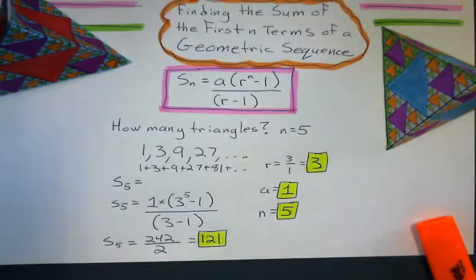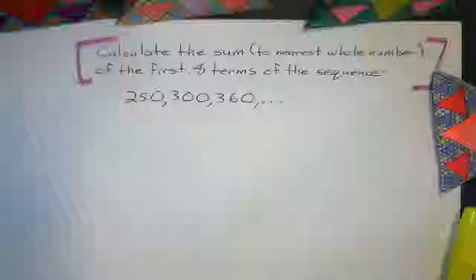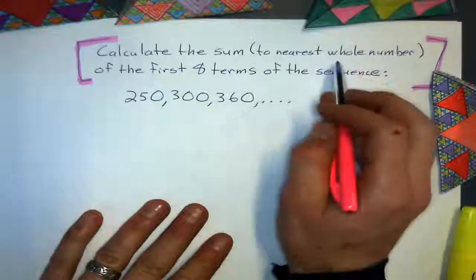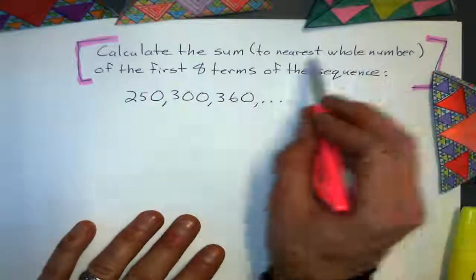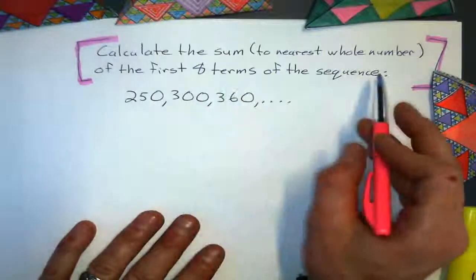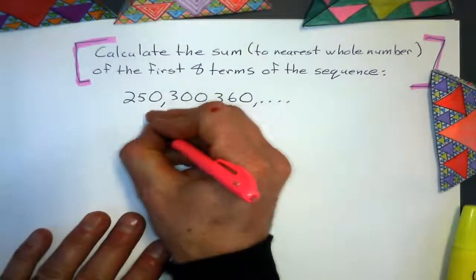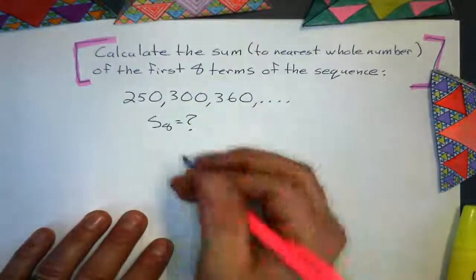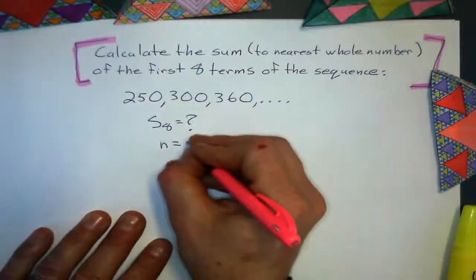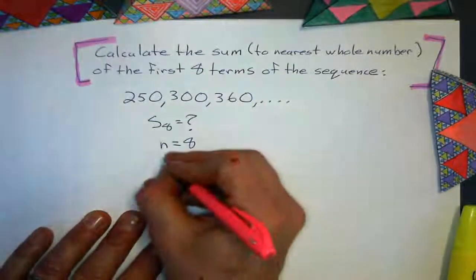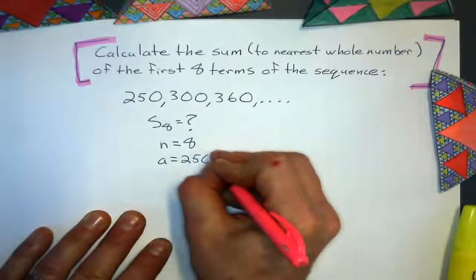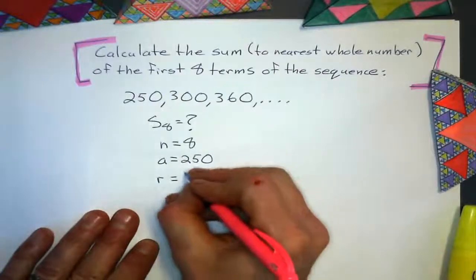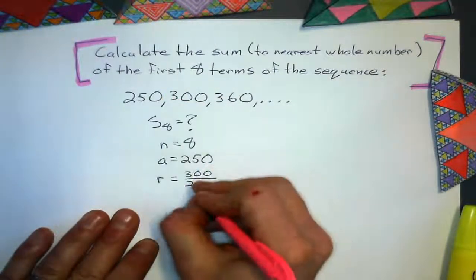What I'll do is give some examples where I just give the sequence and ask you to find the sum of the first n terms — you've still got to calculate the common ratio and all that. We're going to get a decimal when we work this out on the calculator, so I'm going to say to the nearest whole number. The sum of the first 8 terms of the sequence: n is going to equal 8, and my first term equals 250. My common ratio is going to be term 2 divided by term 1.